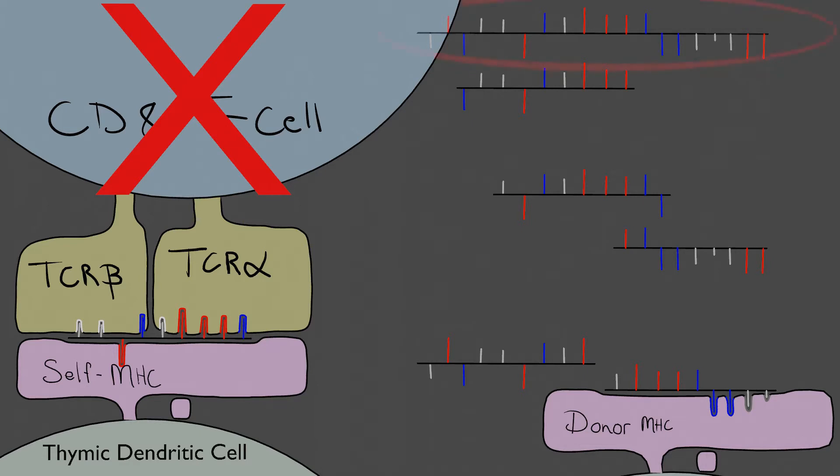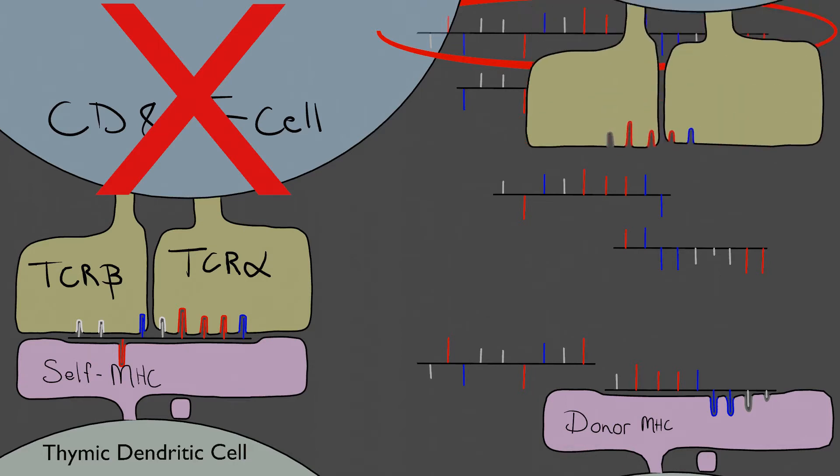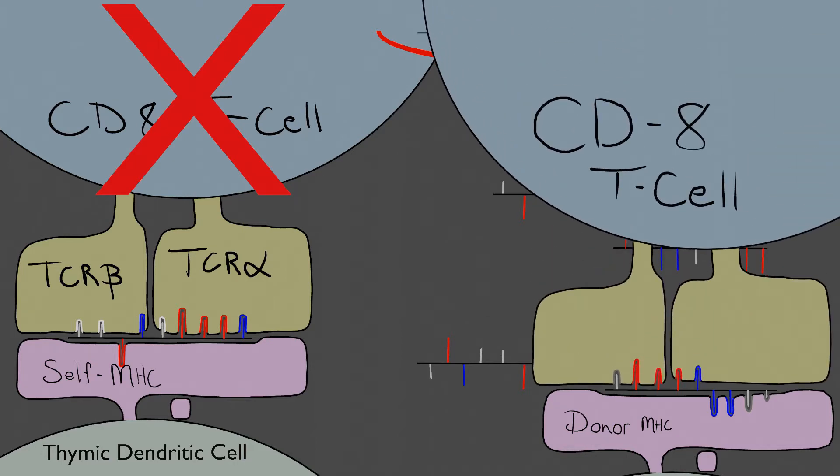Notice that it was the same protein being broken down, but that the change in the MHC binding has resulted in a different fragment of the protein being presented to the recipient T cell. This is a major problem because negative selection used the recipient MHC, not the donor. Therefore, the recipient T cells will not undergo negative selection using the donor MHC peptide fragments.